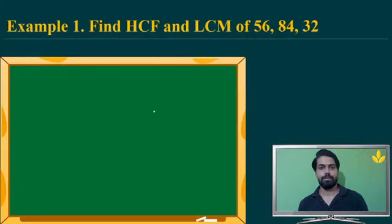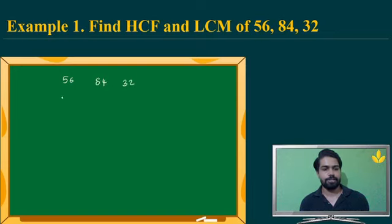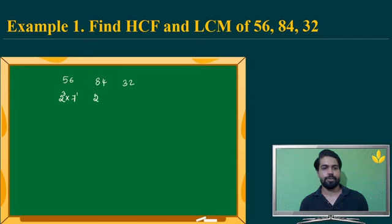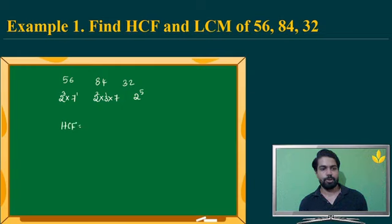Next example: find the HCF of 56, 84, and 32. We write 56 as 2³ × 7¹, and 84 as 2² × 3¹ × 7¹, and 32 as 2⁵. For HCF, the only common factor across all three is 2, and the lowest power is 2², so the HCF is simply 4.